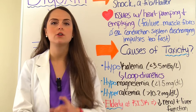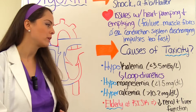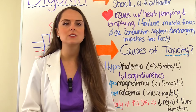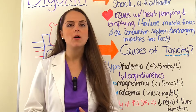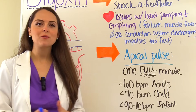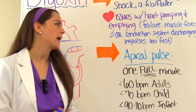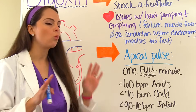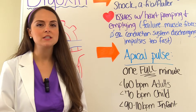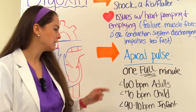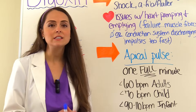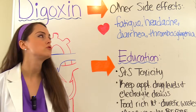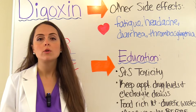Elderly patients are most at risk for digoxin toxicity due to decreased liver and renal function, which is where this drug is removed from the body. Also, before administering digoxin, measure the apical pulse for one full minute. Hold the dose if it is less than 60 beats per minute in an adult, less than 70 in a child, or less than 90 to 110 beats in an infant. Other side effects include fatigue, headache, diarrhea, and thrombocytopenia.